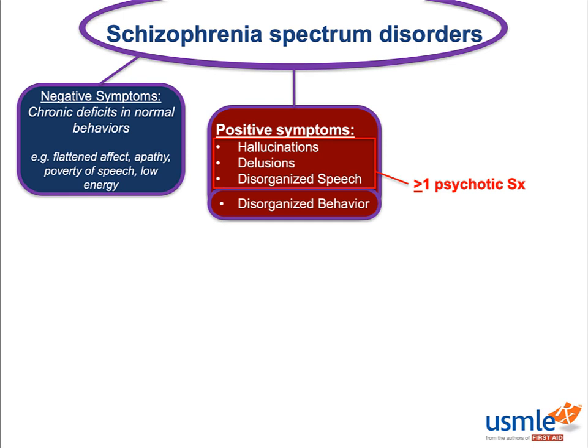These symptoms are thought to be mediated by a different neural pathway than the positive symptoms, because while our drugs work pretty well on the positive symptoms, they don't really do a lot for the negative symptoms. Furthermore, patients with predominantly negative symptoms tend to have worse prognoses — these patients generally never become fully functional.